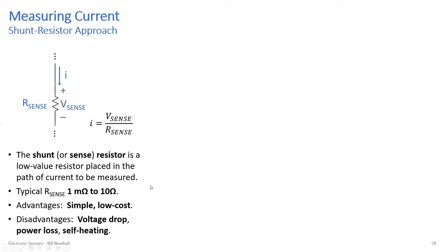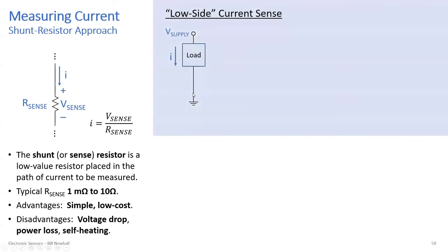There are a couple of ways to use a sense resistor. Suppose you have a supply voltage connected to a load with current going through it. You can put the sense resistor on what's called the low side — the ground side of the load — and measure V_sense there.